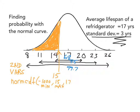The next two numbers are the mean and the standard deviation. Once those numbers are in place with commas in between, all we do is hit enter. We get about 25%, which actually looks very accurate in the picture above.